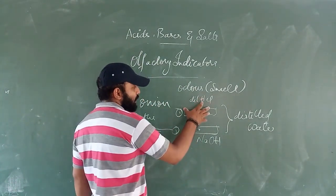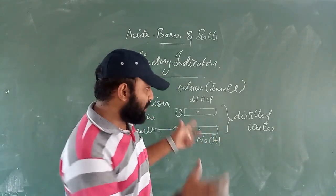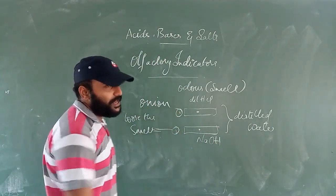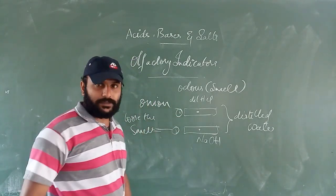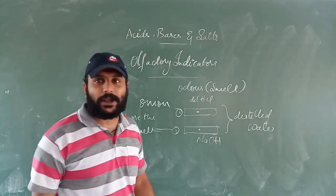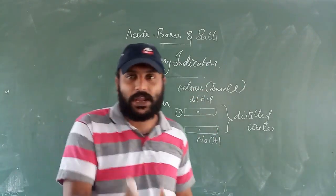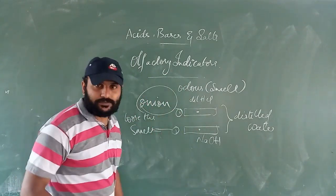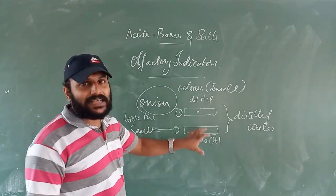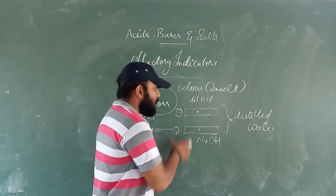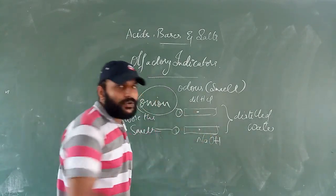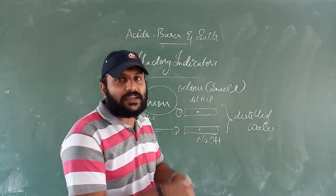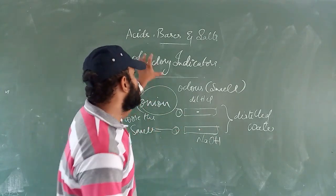The cloth to which we added sodium hydroxide no longer gives the smell of onion, but the cloth to which we added dilute HCl still retains the smell of onion. Through this, onion acts as an indicator: if there is no smell of onion, the substance added is a base; if the smell is retained, the substance is an acid.